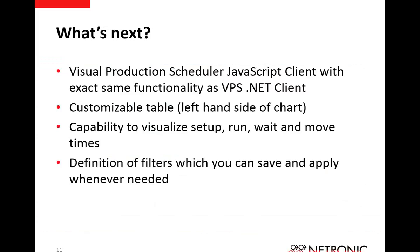Looking at our roadmap: we're further developing the JavaScript web client, which is already really nice, though features like printing are still being worked in. For the VPS shown today, we want to add the ability to customize the table on the left-hand side of the chart — the same configurability as tooltips, but for the production order list. We also want to visualize setup, run, wait, and move times to show what each piece of the operation is happening at what time. And we're adding the ability to define and save multiple filters so planners can save their three or four favorites.